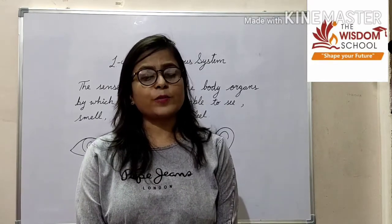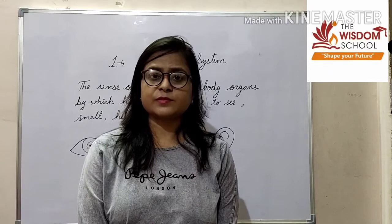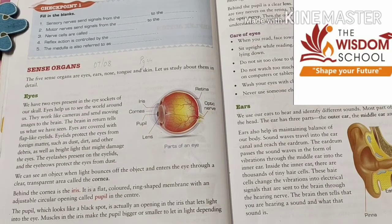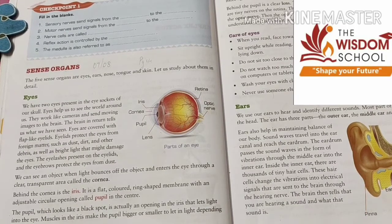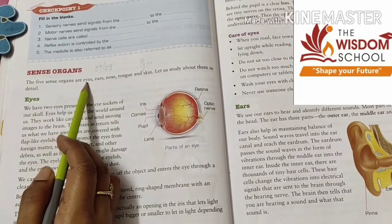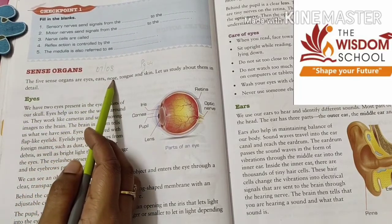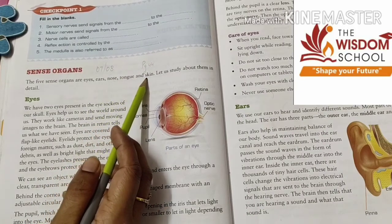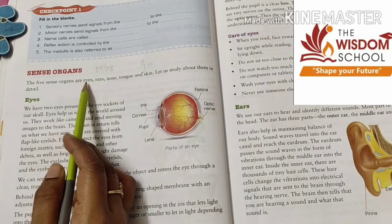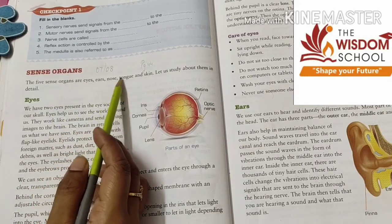Now open lesson for the nervous system, page number 44. The five sense organs are eyes, ears, nose, tongue, and skin. All of us know that our five sense organs are eyes, ears, nose, tongue, and skin.